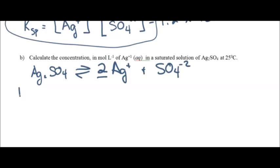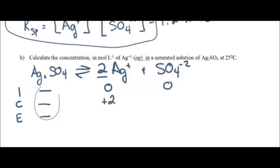We're going to use an ICE chart for organizational purposes — you'll never be graded on an ICE chart, but it'll keep you out of a lot of trouble. Since nothing is said about starting amounts, initial concentrations for the ions are zero. We put dashes for solids — never put zero for a solid or liquid. Pure solids and pure liquids never change their concentration in an equilibrium reaction. On the product side, silver increases by 2x and sulfate increases by x.